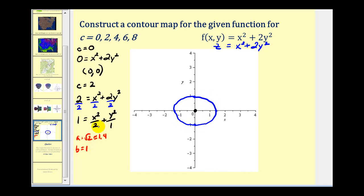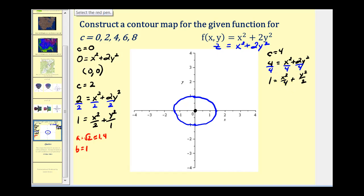Next we have c equals four, giving four equals x squared plus two y squared. Dividing by four: one equals x squared over four plus y squared over two. Again it's an ellipse with a horizontal major axis, but now a equals two and b equals the square root of two, approximately 1.4. To graph this ellipse we go right and left two units and up and down 1.4 units, then sketch the second level curve.